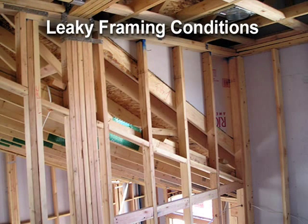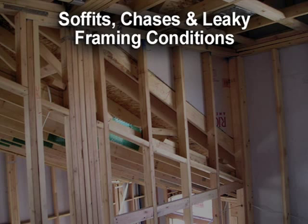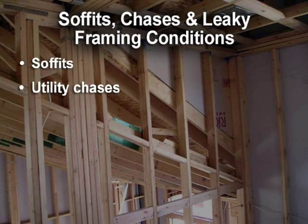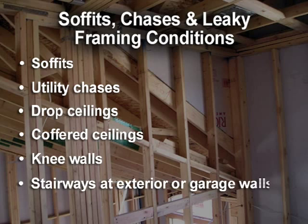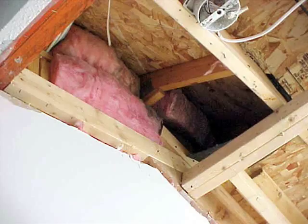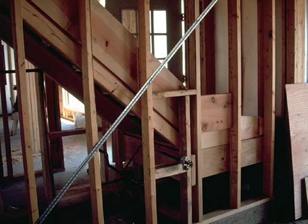Today's home designs have created an increased number of interior framing conditions that can cause very high levels of uncontrolled air leakage. These conditions include soffits, utility chases, dropped ceilings, coffered ceilings, knee walls, and stairways at exterior walls or garage walls. These often are the largest holes in the building shell and are the most difficult to find or seal once the building has been completed. The goal is to plan ahead and look for where these framing conditions may occur, and then to seal them up either prior to or during the framing process.